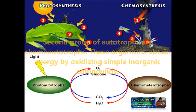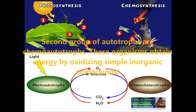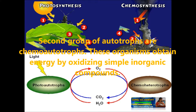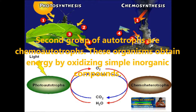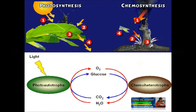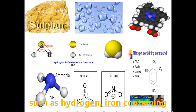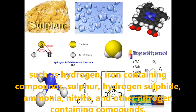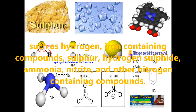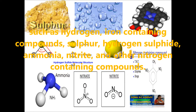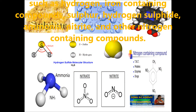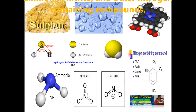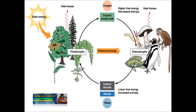The second group of autotrophs are called chemoautotrophs. These organisms obtain energy by oxidizing simple inorganic compounds such as hydrogen, iron-containing compounds, sulfur, hydrogen sulfide, ammonia, nitrate, and other nitrogen-containing compounds. However, all these organisms require carbon dioxide as a source of carbon atoms.